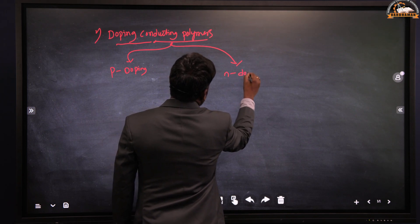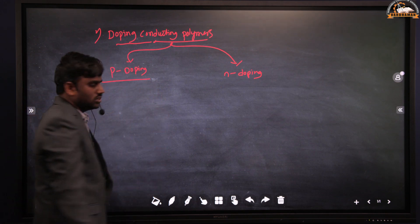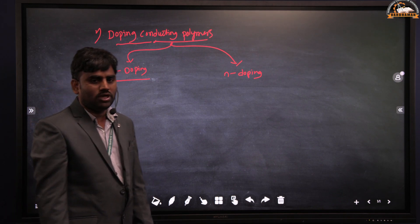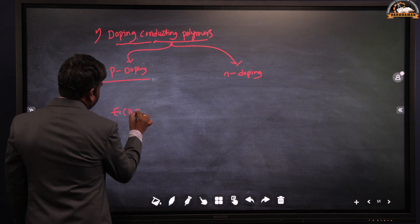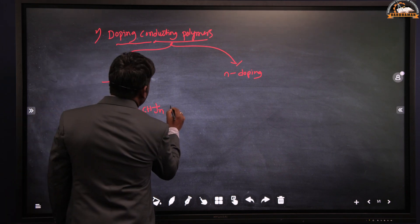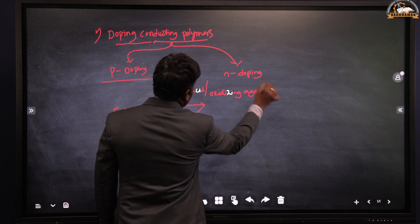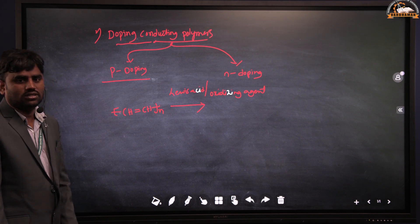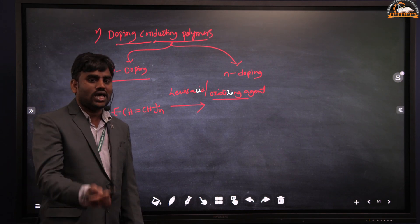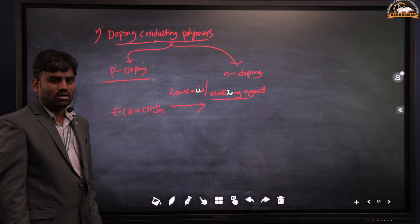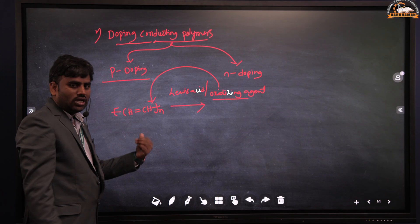P-doping means positive doping conducting polymers. Here I am taking the example of polyacetylene. For this polyacetylene molecule, I am going to add a Lewis acid or any oxidizing agent. An oxidizing agent oxidizes another substance — here the polymer material. While adding the oxidizing agent, it is going to oxidize the polyacetylene molecule.